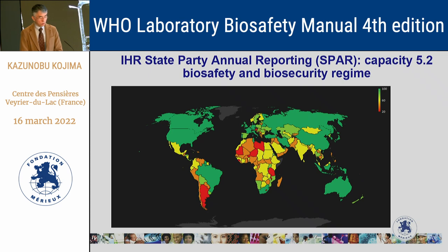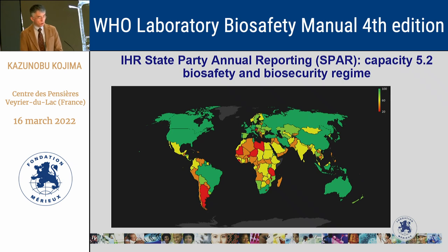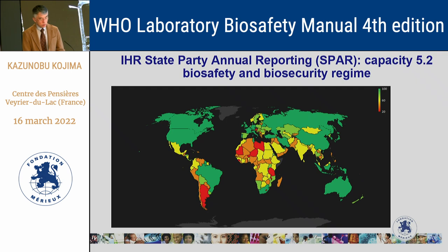This global map outlines biosafety and biosecurity regime achievement. This is based on IHR — International Health Regulations — state parties' annual self-reporting about biosafety and biosecurity. The map shows that some countries have made good achievements, but unfortunately, mostly resource-limited countries are still struggling to achieve and maintain a good biosafety and biosecurity regime. That is the reality.